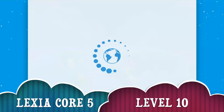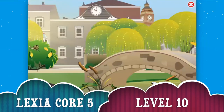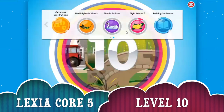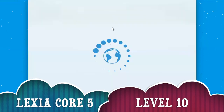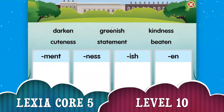Let's go and click next. Let's get the animation. Which one do you want to do now? I think you want to do simple suffixes, right? Let's do this — cuteness, darken, statement, greenish, kindness, beaten.